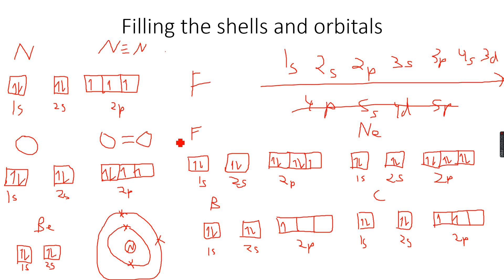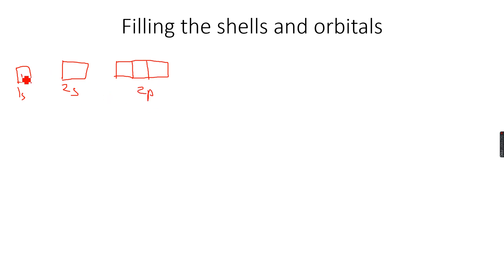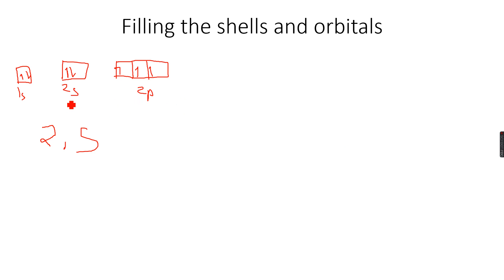This is what orbitals tell us about chemical bonding. Now, how do we write electronic configurations? Let's take the example of nitrogen. We have 1s, then 2s, then 2p. We fill two electrons here, two here — that's seven electrons in nitrogen. If you remember, for nitrogen you always wrote 2,5 — two electrons in the first shell and five in the second shell.